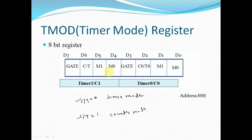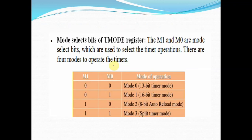The next two bits, M1 and M0, are called the timer mode bits and are used to set the different modes of a timer. From the table: when M1 M0 = 00 it is Mode 0, a 13-bit timer; when 01 it is Mode 1, a 16-bit timer; when 10 it is Mode 2, an 8-bit auto-reload timer; and when 11 it is Mode 3, a split timer mode.